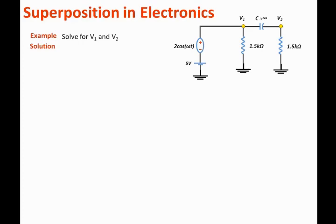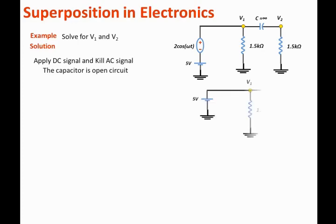So let's apply the DC signals only and kill the AC signal. For the DC circuit, the AC voltage source becomes short circuit and the capacitor becomes open circuit. So let us redraw the DC circuit, and we're going to short out the AC signal and replace the capacitor with open circuit.